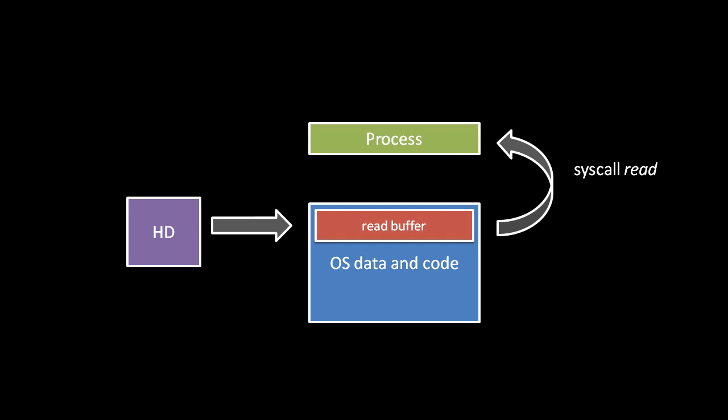As for the read system call, like with write, there's an intermediary buffer in the operating system. When a process invokes read, the data is not copied directly from the storage device to the process — first it is copied into a buffer in the operating system, and then from there copied to the process. This is done mainly for performance reasons, since IO devices like hard drives are typically very slow relative to the CPU. However, unlike with write, when you're trying to read data, you can't do anything until you actually get the data — we need the data now.